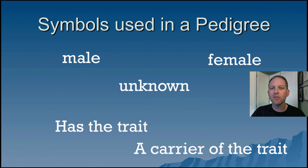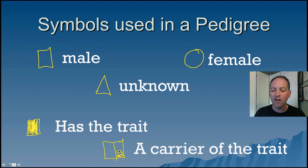And there are going to be certain symbols we're going to use. For a male in a pedigree, we're going to use squares. Females are going to be circles. And if something is unknown, we'll use something that's a triangle. If the individual has the trait that you're tracking, then we're going to shade in that symbol. If somebody is known to be a carrier of the trait, but they don't have it themselves, then we'll shade in half of the symbol.